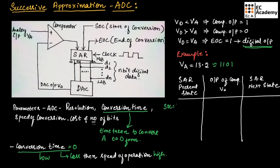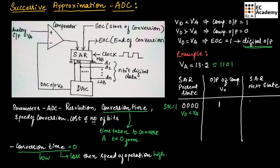Initially, when start of conversion is made as 1, the present state of SAR will be 0, 0, 0, 0. This is given as input to the DAC, which converts it to analog form and compares it with the analog input 13.2. Since the output of DAC is less than the analog input, VD is less than VA, so the comparator output will be 1. The SAR next state will then be 1, 0, 0, 0.